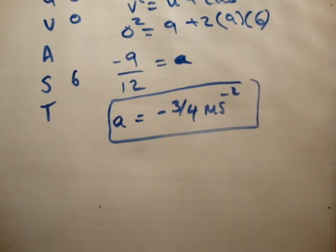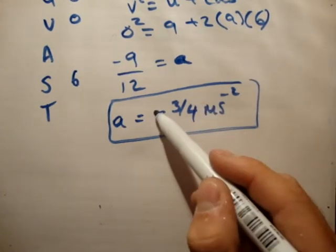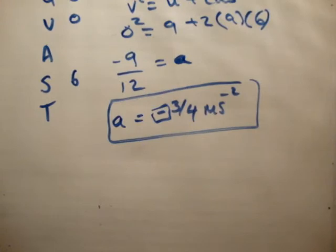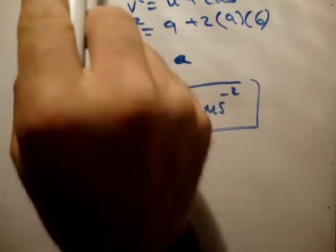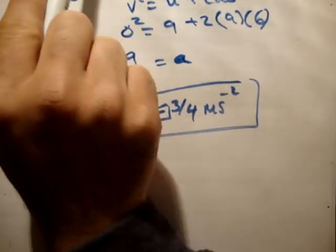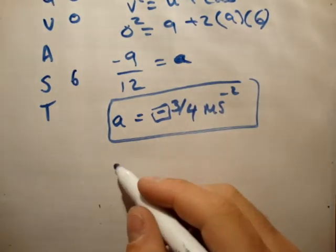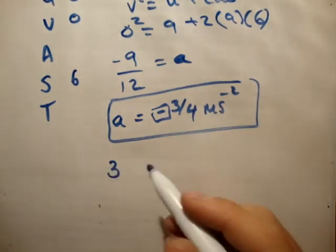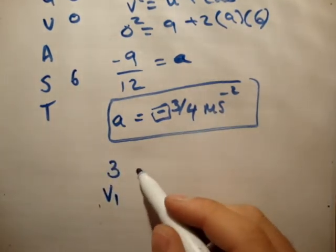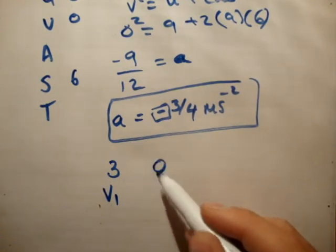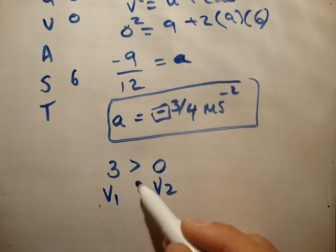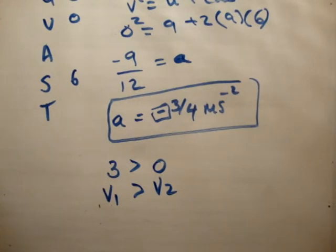Now, does that make physical sense? The first question is, and it does, because look, this negative sign here means we're decelerating. How do we know we're decelerating? Well, first of all, the question tells you, but look, the initial velocity is 3, that's v1. The final velocity is 0, that's v2, and where the final velocity is less than the initial velocity, you are decelerating.